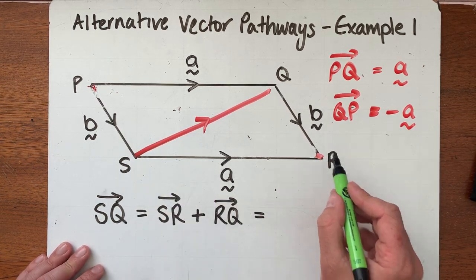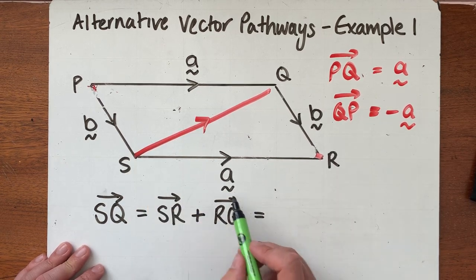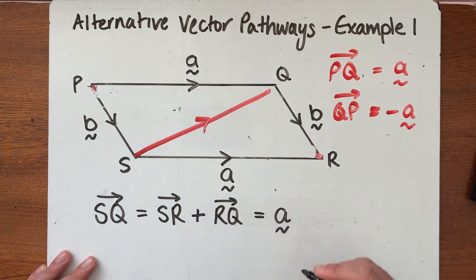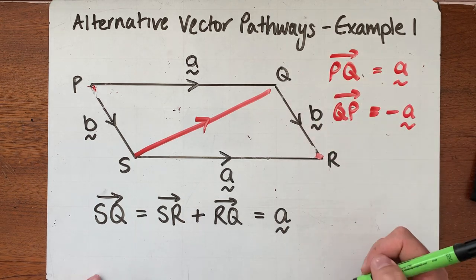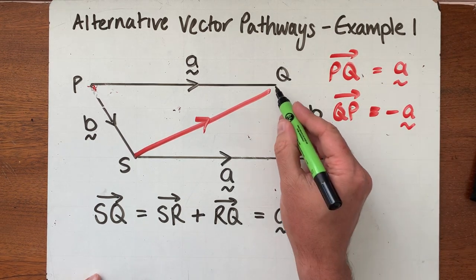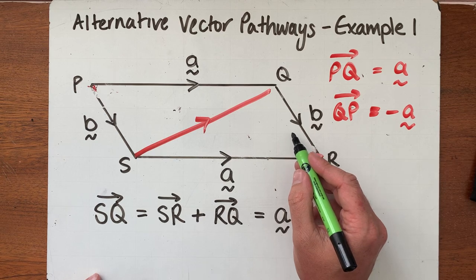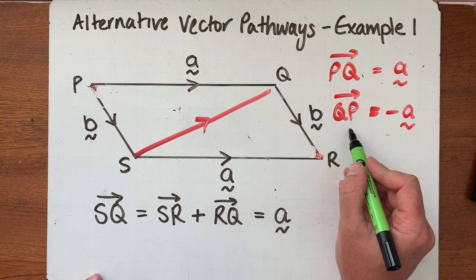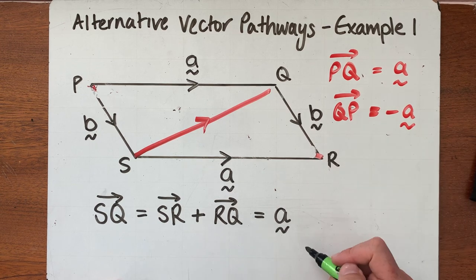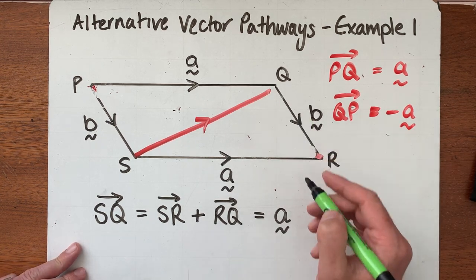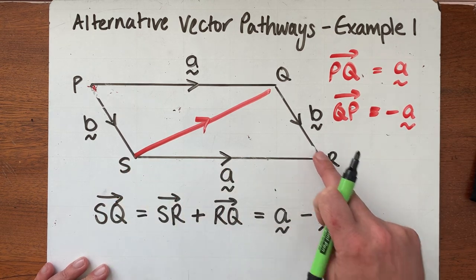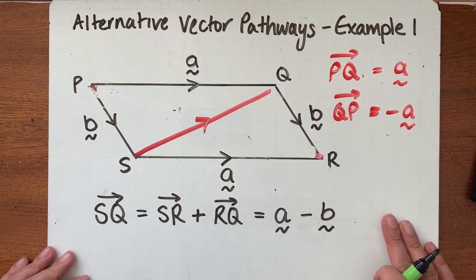Let's change these to lowercase letters. Going from S to R — that's just vector 'a', it goes that direction and that size. But going from R to Q, I have to go along vector b in the opposite direction, because the arrow points down but I want to go up. Remember, going the opposite direction along a vector makes it negative, so I'm subtracting b. The alternative pathway from S to Q is a minus b.